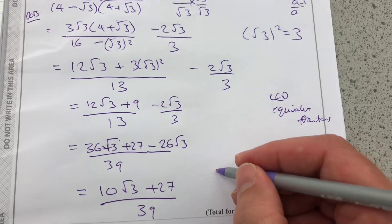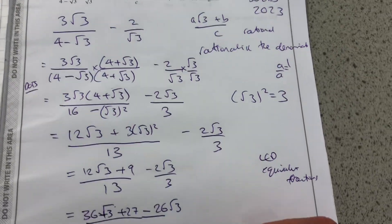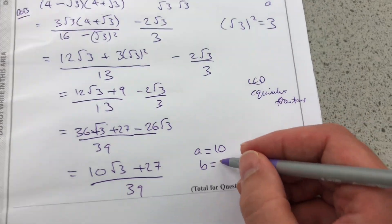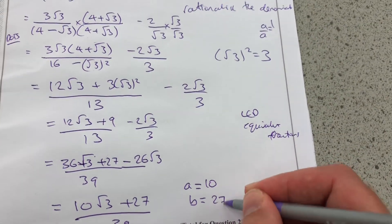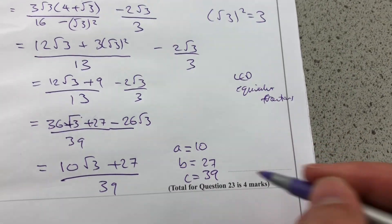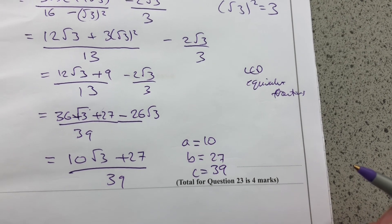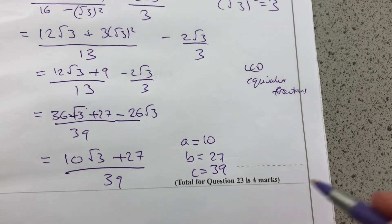Where I now have an A which is 10, a B which is 27, and a C which is 39, all of which are rational integers as expected in the question. So 10 root 3 plus 27 all over 39.